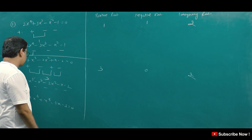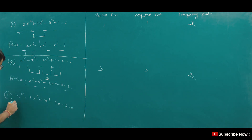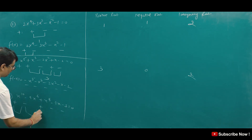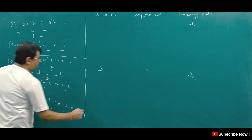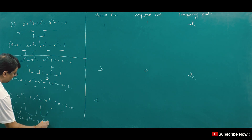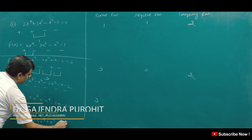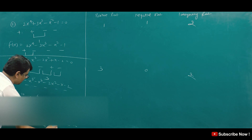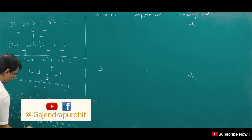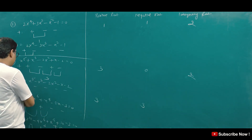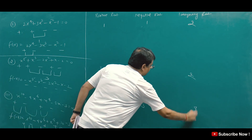Last question. Look at the signs: plus, minus, plus, minus, minus — the sign changes are 1, 2, 3. So there are 3 sign changes, meaning 3 positive roots. Now putting -x: x¹⁰ — no difference here — then plus 2x — minus 3 = 0. Signs are plus, minus, plus, plus, minus — sign changes give 3 negative roots. So 3 positive + 3 negative = 6 real roots. Total degree is 10, so 10 - 6 = 4 imaginary roots.